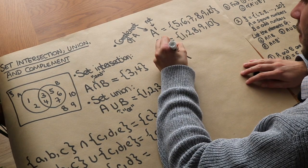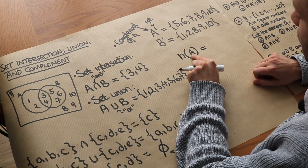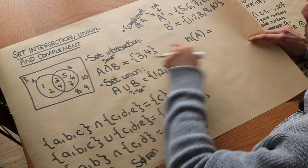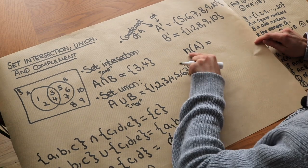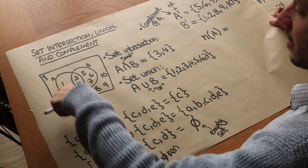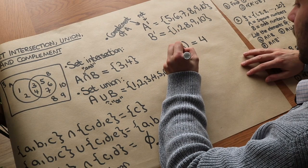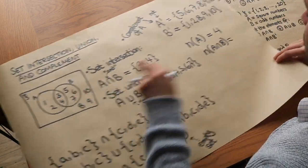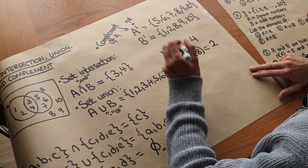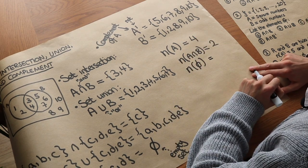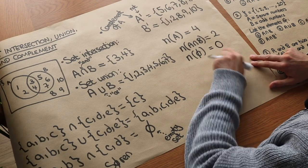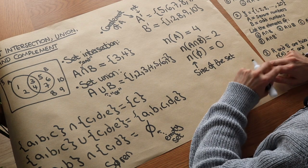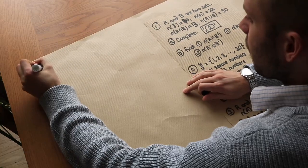There's one final piece of notation. If you have the letter N followed by a set, this is a function that takes a set and tells you how many things are in it — don't confuse that N with the intersection symbol. So N(A) tells us the number of things in A: 1, 2, 3, 4, so we get 4. N(A ∩ B) asks how many things are in the intersection — there are two, so it's 2. And N(∅), the size of the empty set, is zero. This gives the cardinality of the set, meaning its size.